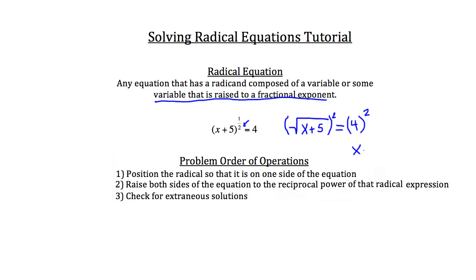We get x plus 5 on the left because the radical is canceled out by the square. And we get 16 on the right-hand side. Then we subtract 5 from both sides of the equation and get x equals 11. The last step is to check for any extraneous solutions — in our case there are none, but we may encounter some in future problems and I'll show you what to do in those cases.